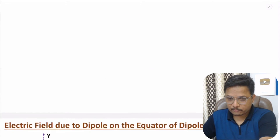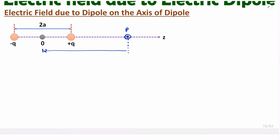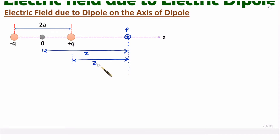Let us start with the first case: electric field due to dipole on the axis of dipole. Here we have the dipole axis and we consider an observation point on the axis, point P. This point is with respect to the origin on the Z axis, at distance Z. The spacing between the two charges is 2A, so the distance from plus Q charge to the observation point is Z minus A.